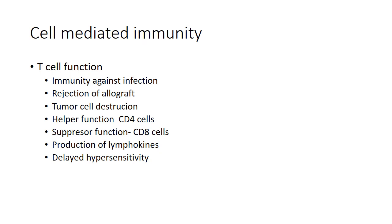The major activities of T lymphocytes are as follows. First is immunity against infection — T cells mediate effective immunity against bacteria such as mycobacteria, many viruses, and almost all parasites. Second is the rejection of the allograft — when an organ is transplanted from one person to another, it is called an allograft, and the body tries to reject such a transplanted organ mainly by T cell-mediated function. Third is tumor cell destruction — although other mechanisms are also involved, T cell activity is the predominant form.